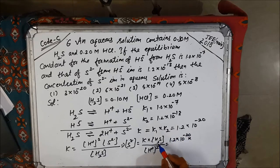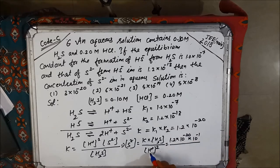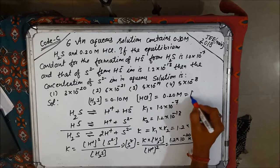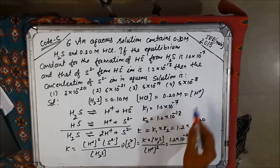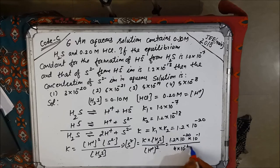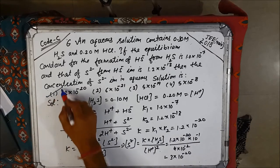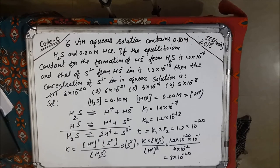K is 1.2 × 10⁻²⁰, [H₂S] is 0.1 (i.e., 10⁻¹). Since HCl is a strong acid, [H⁺] = 0.2, so [H⁺]² = 4 × 10⁻². Solving: [S²⁻] = (1.2 × 10⁻²⁰ × 10⁻¹) / (4 × 10⁻²) = 3 × 10⁻²⁰. The right option is 1.